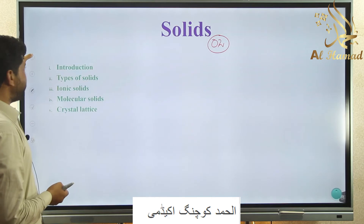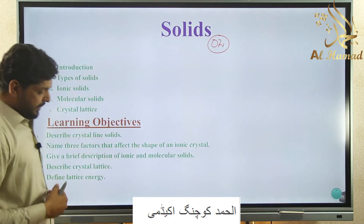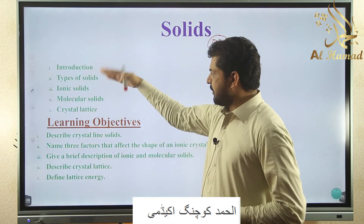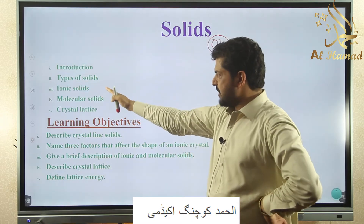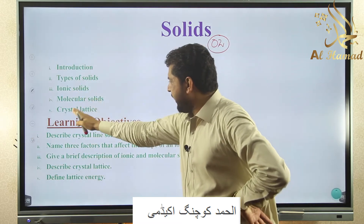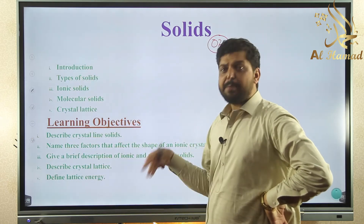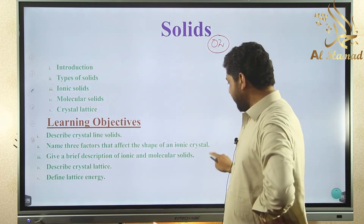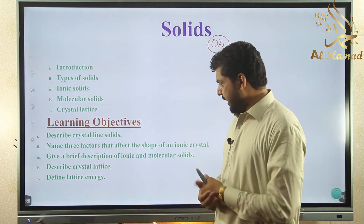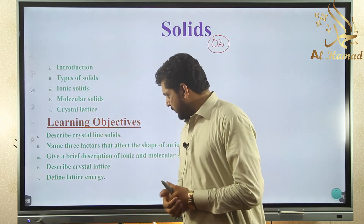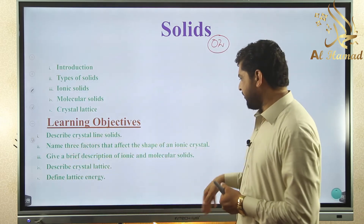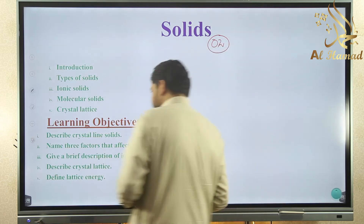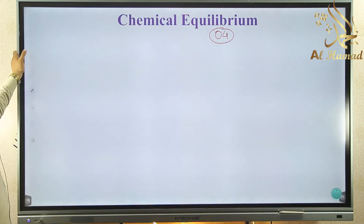Chapter 5 is States of Matter 3 — Solids. Again, 2 MCQs come from this chapter. Topics include: introduction, types of solids — amorphous and crystalline solids — ionic solids, molecular solids, and crystal lattice. Learning objectives: describe crystalline solids, name three factors that affect the shape of ionic crystals, give a brief description of ionic and molecular solids, describe crystal lattice, and define lattice energy.